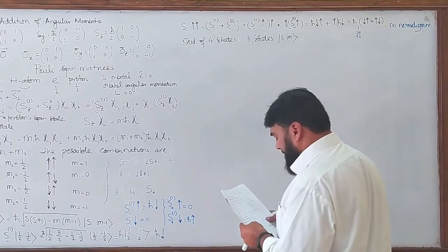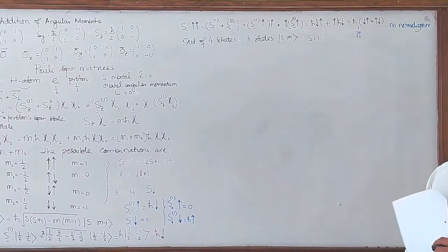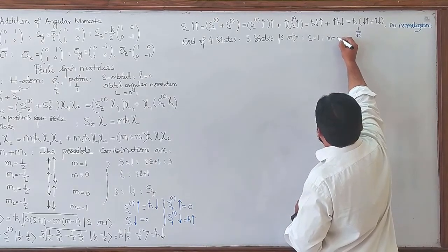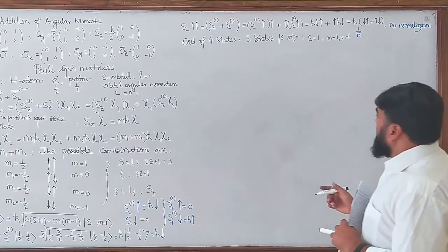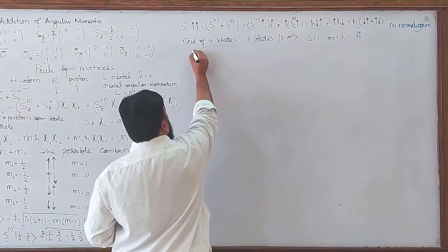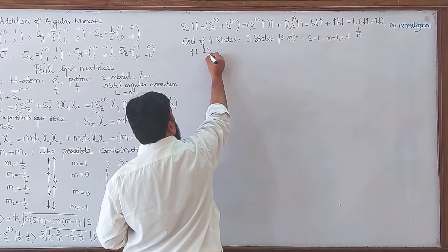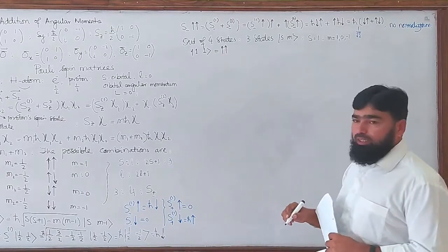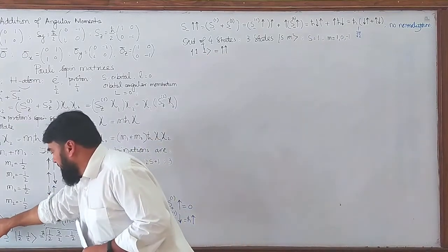The state |S=1, M=1⟩ in the S,M representation is equal to |up, up⟩. The state |1,1⟩ equals up-up. Now I am talking about the hydrogen atom. In the hydrogen atom we are having one spin, and you are having M values of one, zero, and minus one.